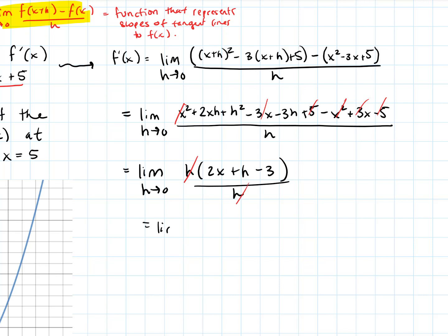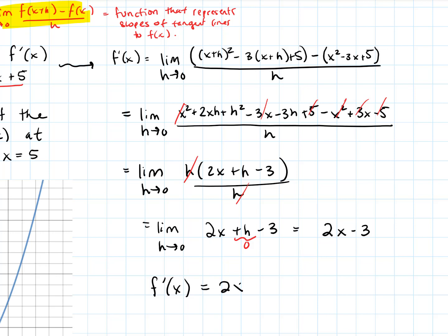Now we take the limit as h goes to zero of 2x plus h minus 3. As h approaches zero, this is simply 2x minus 3. So f prime of x equals 2x minus 3, and we have our derivative — a function.